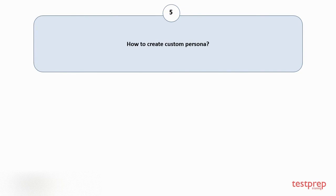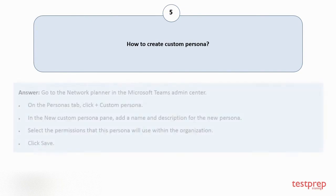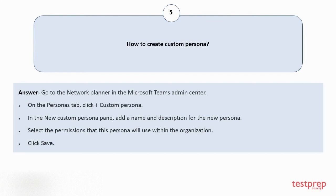Question number 5: How to create a custom persona? 1. Go to the network planner in the Microsoft Teams admin center. 2. On the Personas tab, click plus custom persona. 3. In the new custom persona pane, add a name and description for the new persona. 4. Select the permissions that this persona will use within the organization. 5. Click save.